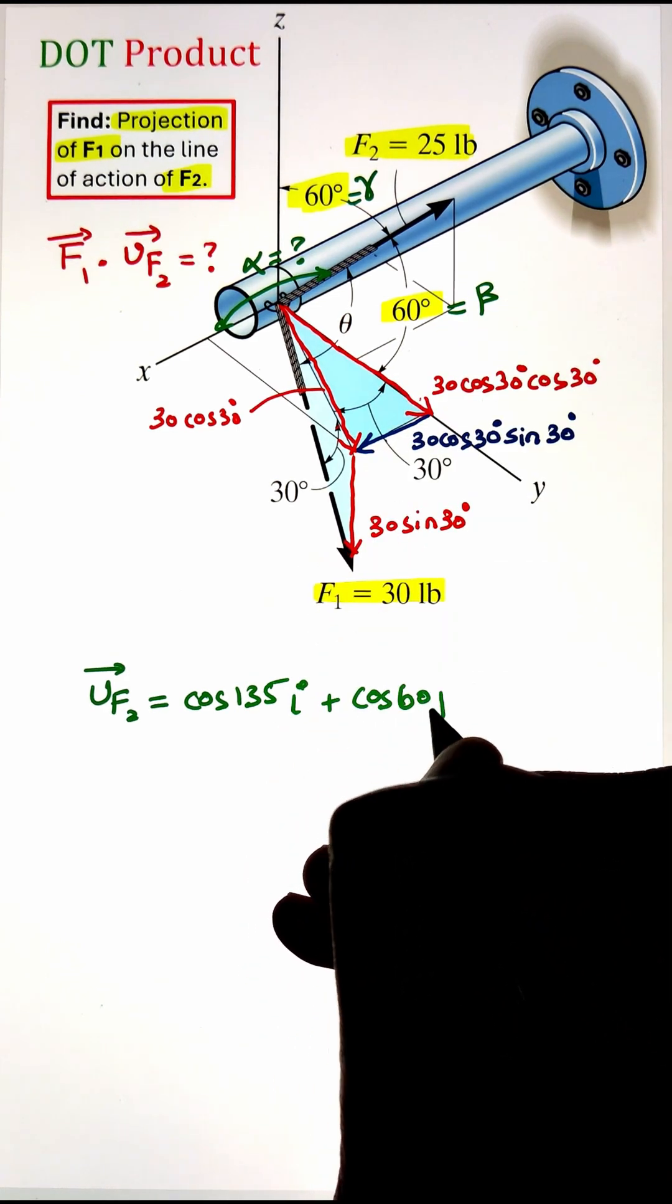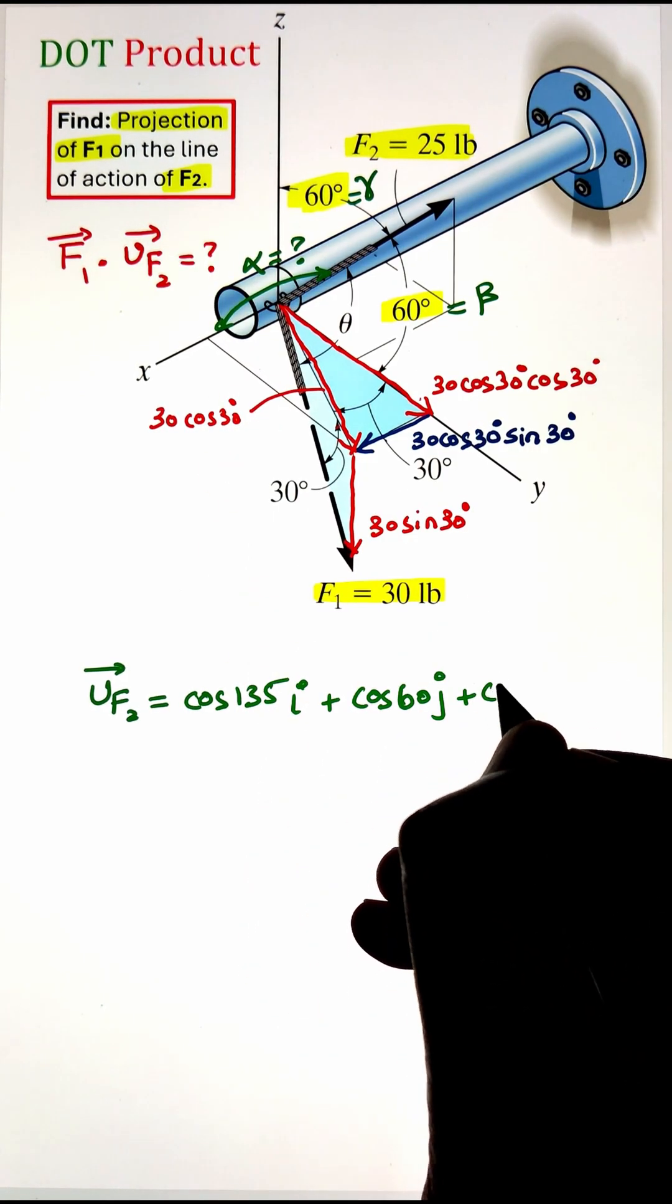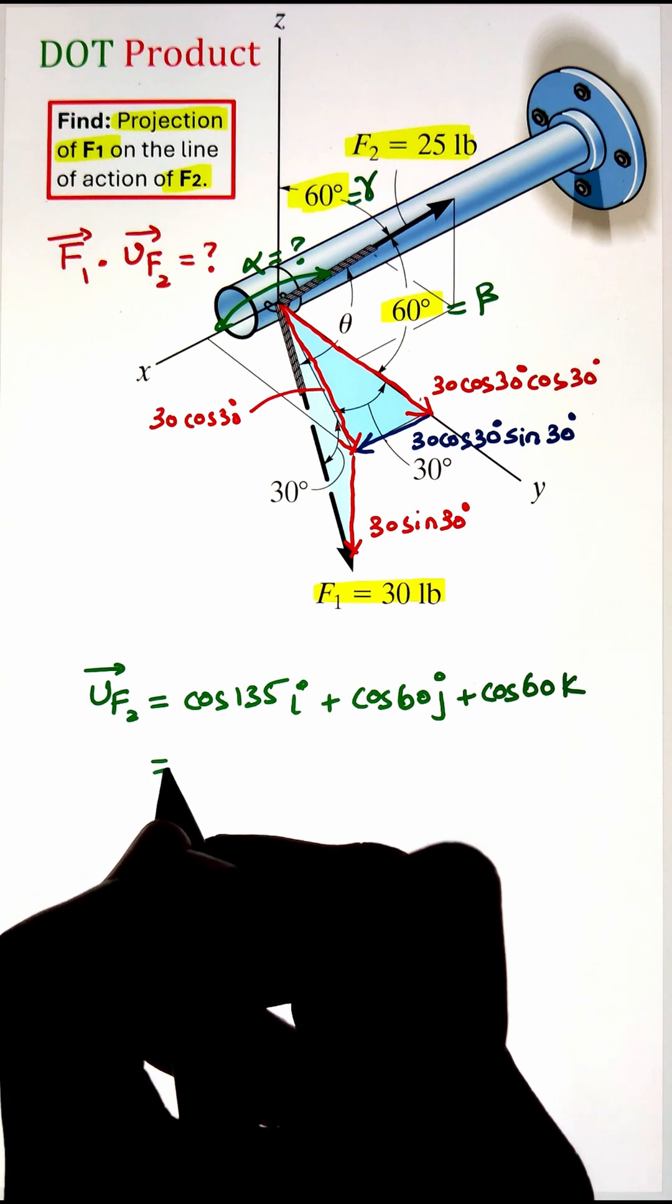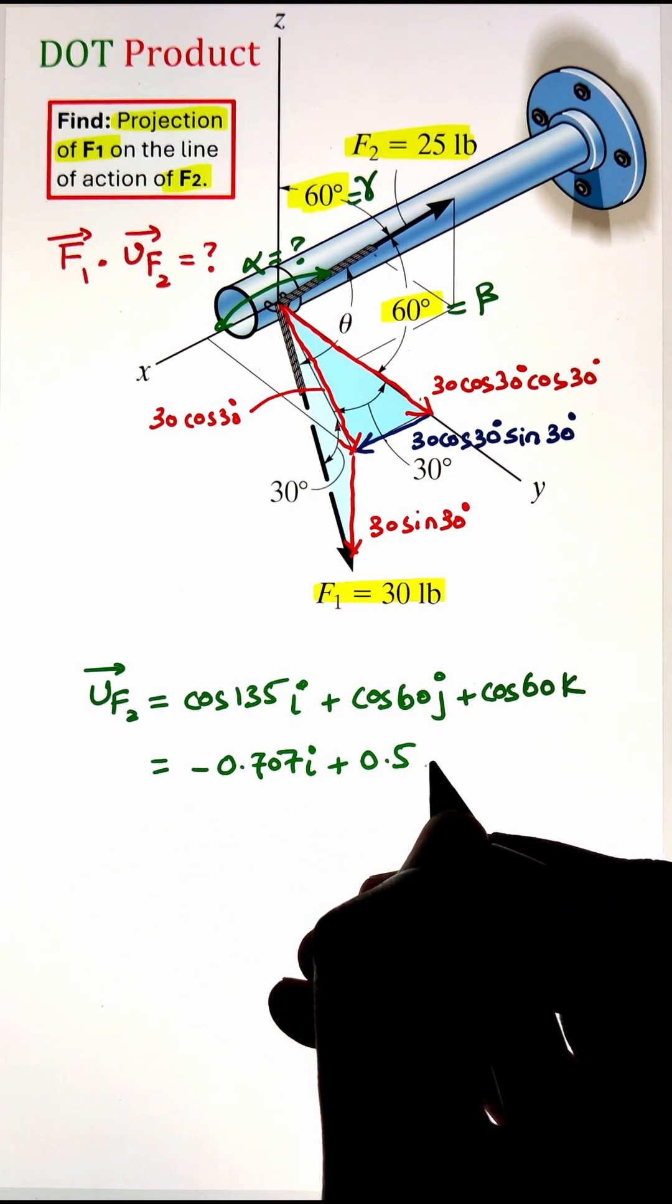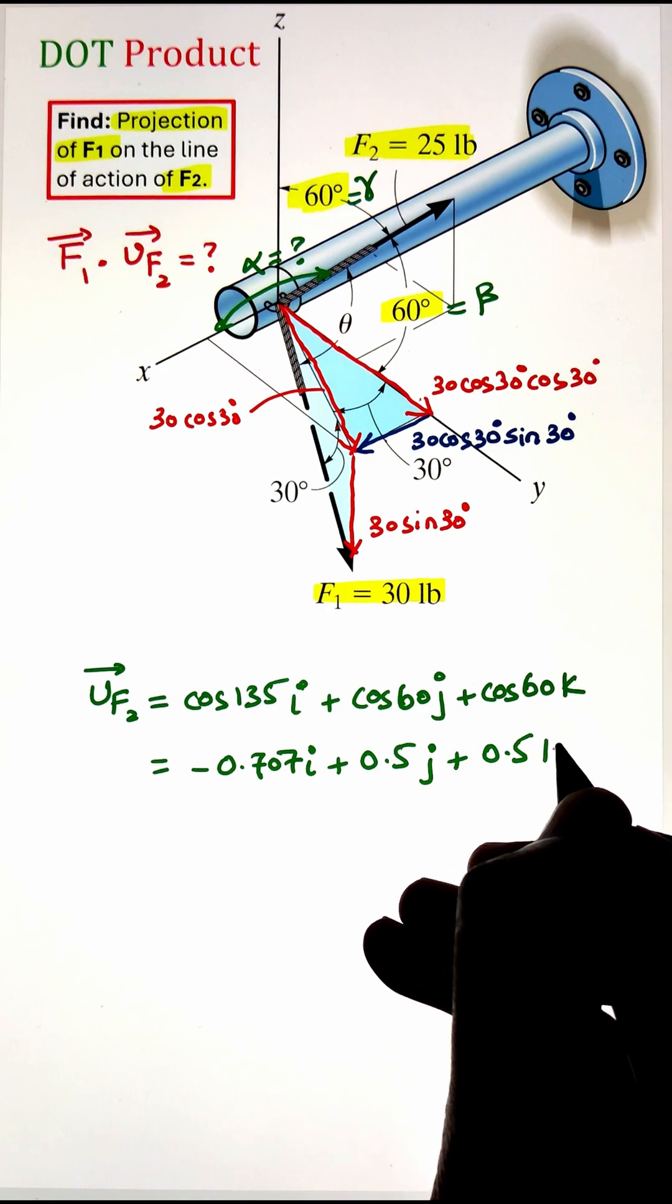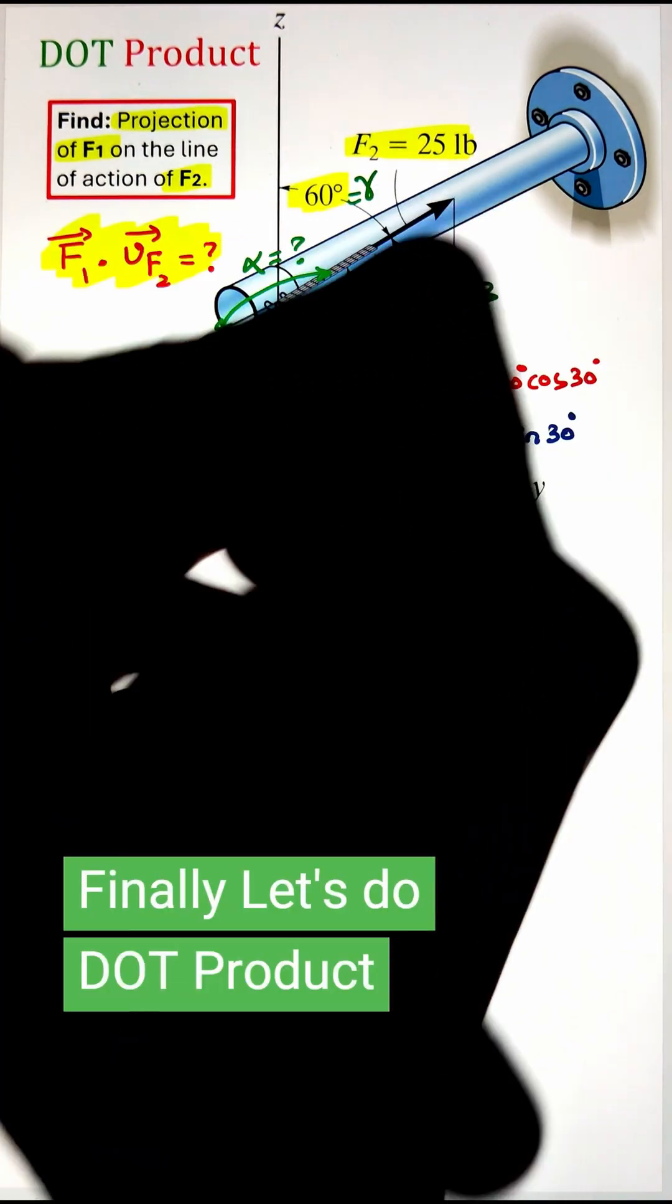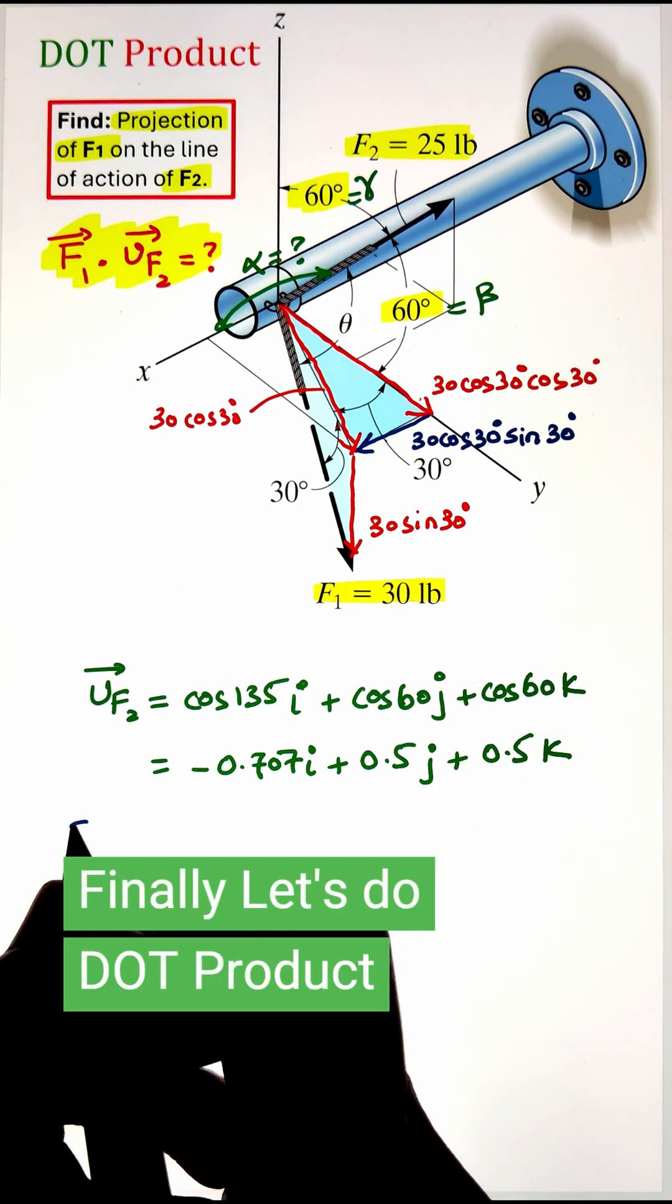Once we have all the direction cosines of this force, we can write the unit vector by taking the cos function of each one of those angles. So our unit vector F2 is coming as negative 0.707i plus 0.5j and plus 0.5k.